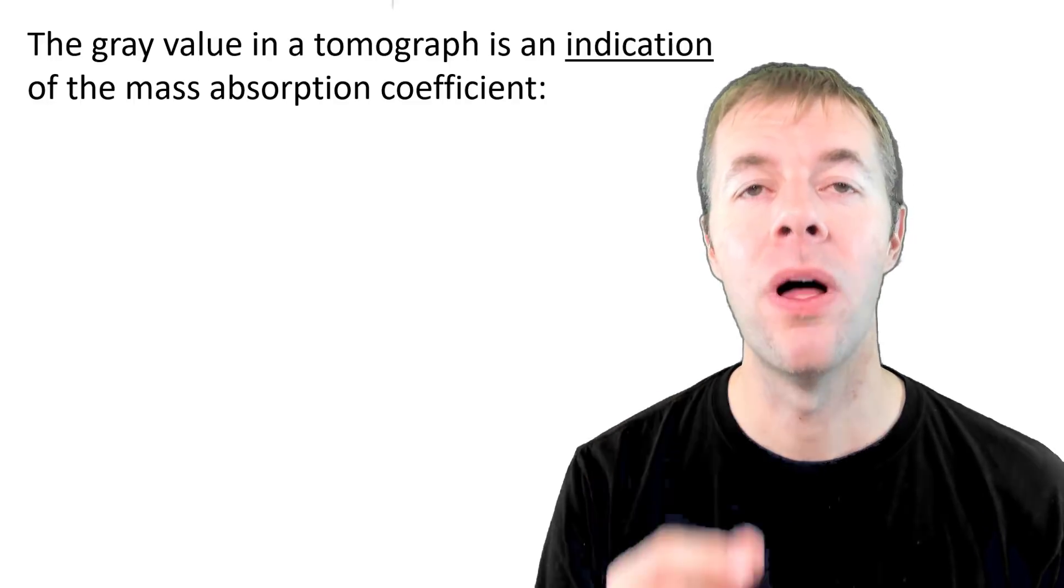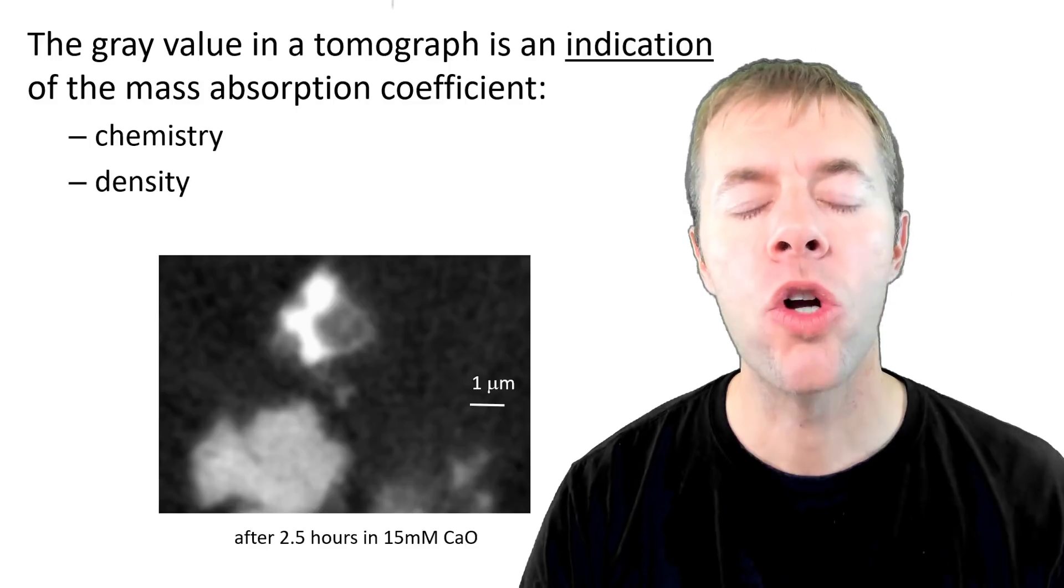In these tomographs, they give you images in gray values. These gray values are super valuable. They're an indication of the mass absorption coefficient or the chemistry and the density of the material. Therefore, when I see different gray values, I know I have either different chemistry, density, or possibly both going on.